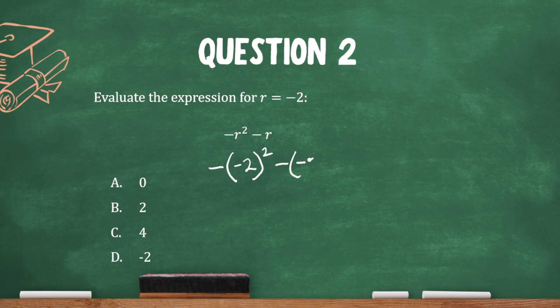Now instead of r, we'll put negative 2. So if you have your calculator, you could put it in exactly like this with the parentheses so that you don't make a mistake.